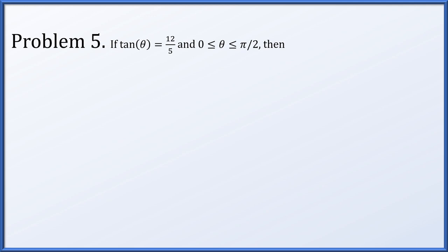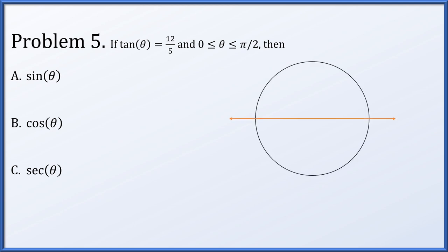In problem 5, the tangent of theta is 12/5 and theta is between 0 and π/2. We're going to find exact values for the sine, cosine, and secant of theta. We know the ratio y/x is 12/5, meaning y = (12/5)x. This is a line through the origin with slope 12/5. It intersects the unit circle at two points, and the one in the first quadrant is our angle theta.